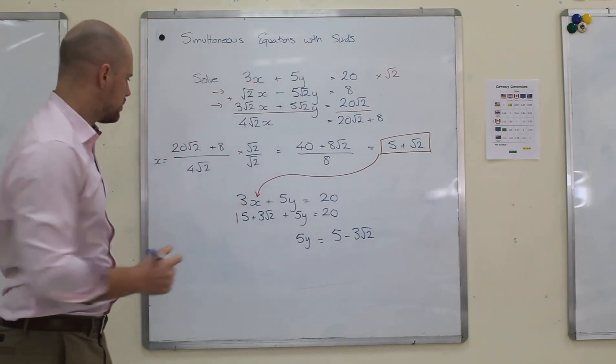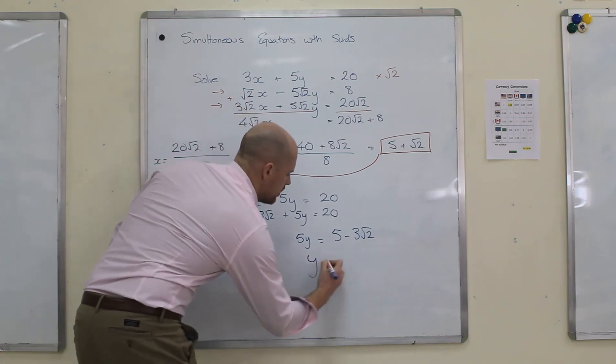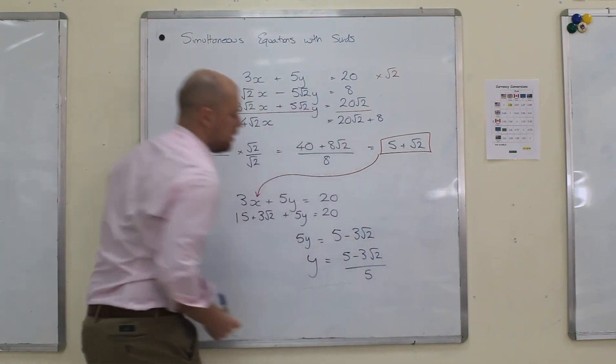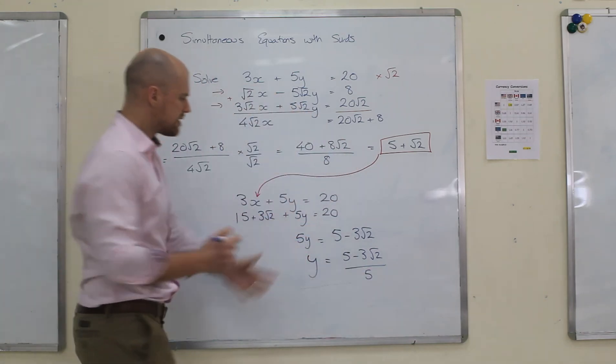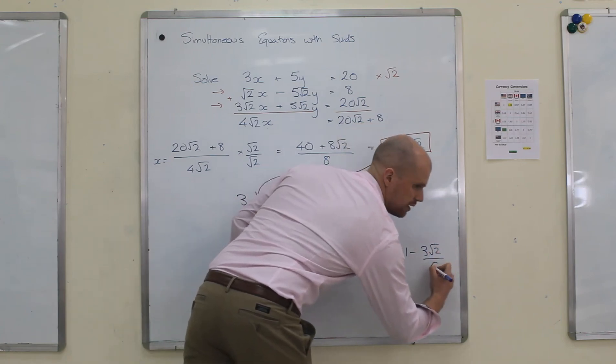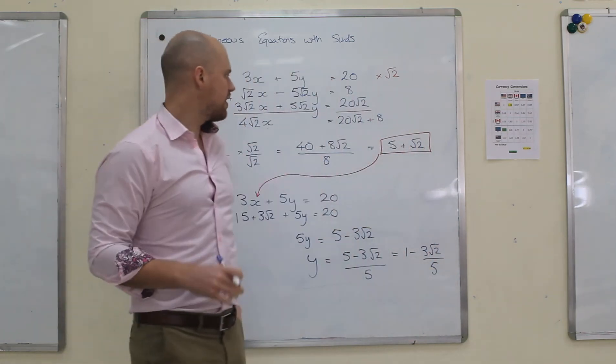And I'll divide through. So y is 5 minus 3 root 2 divided by 5. You can leave it like that, or you can simplify: 1 minus 3 root 2 divided by 5. Either of these is fine.